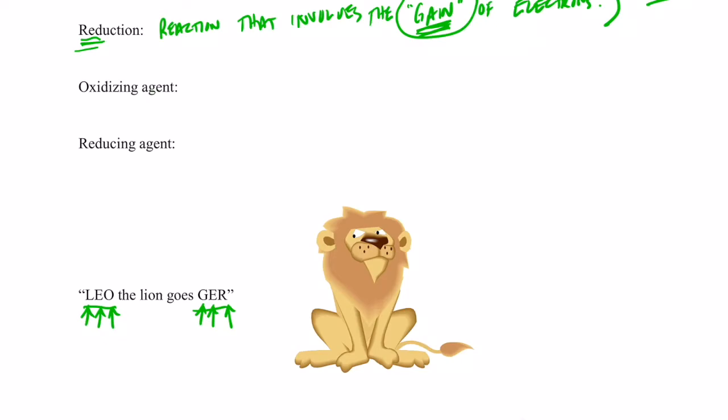As soon as I learned that, I never forgot that oxidation is losing electrons. Leo, lose electrons, oxidation. And gaining electrons is reduction. Hopefully, you'll have the same experience. You'll think of Leo the Lion going Ger whenever you're trying to decide if something has been oxidized or reduced.